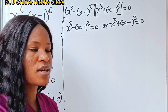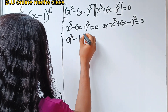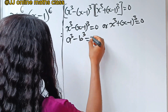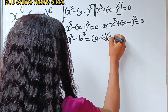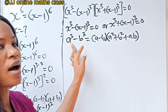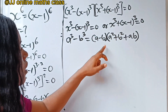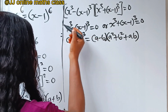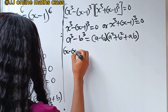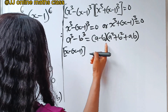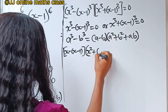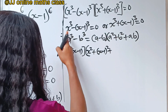For the first case, x cubed minus x minus one cubed equals zero. This is of the form a cubed minus b cubed, where a is x and b is x minus one. The identity states this equals a minus b, multiplied by a squared plus b squared plus ab. So we expand: x minus x minus one, multiplied by x squared plus x minus one squared plus x times x minus one.